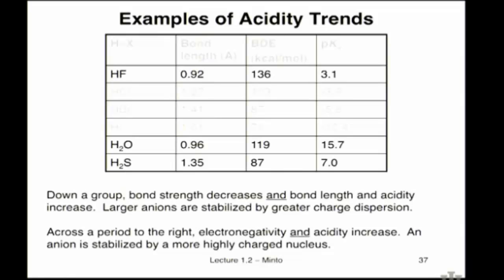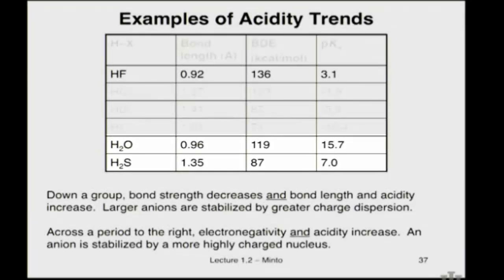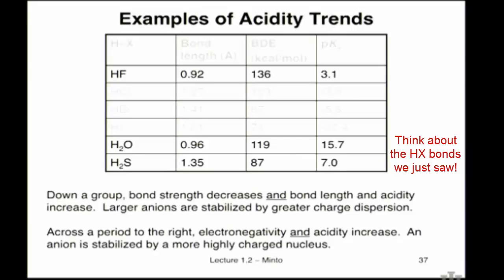This comparison at the bottom is another group comparison. As we go down the periodic table from water to H2S, water is a pretty weak acid while H2S is much stronger. As you go down to sulfur, the bond gets longer, the bond gets weaker, and the acid is therefore stronger.